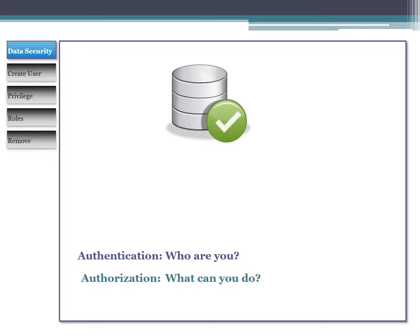In the database world, the first thing we need to know is who is the person accessing the database. Typically in Oracle, we do that with a username and password, which we're going to learn how to set up. But once you know who the user is, you also want to make sure you know what they're allowed to access - which objects they can manipulate, whether they're allowed to create objects, or delete objects.